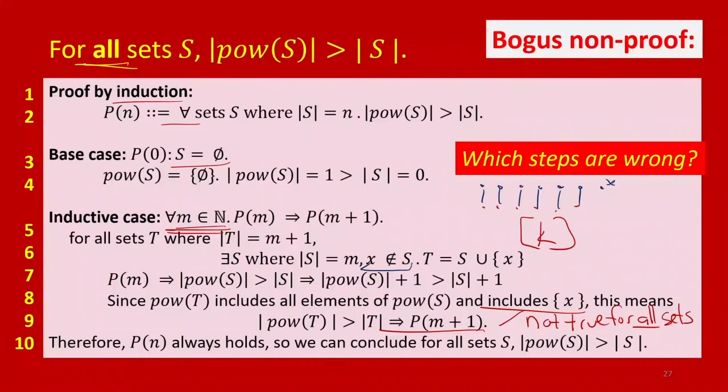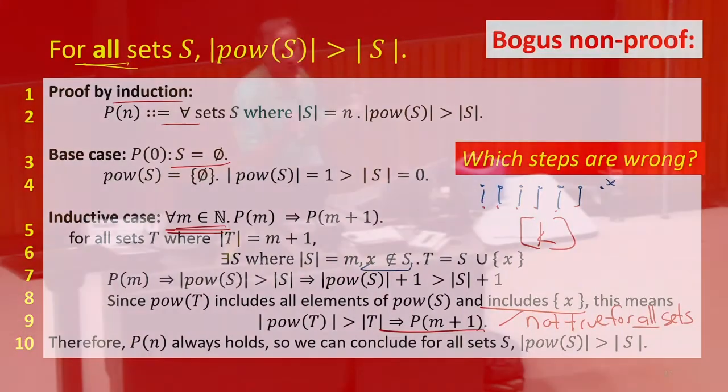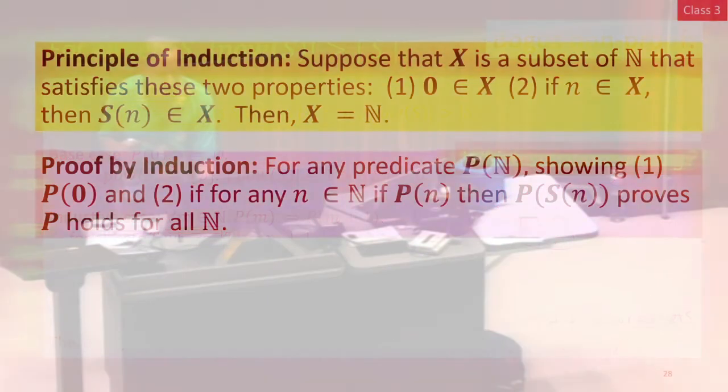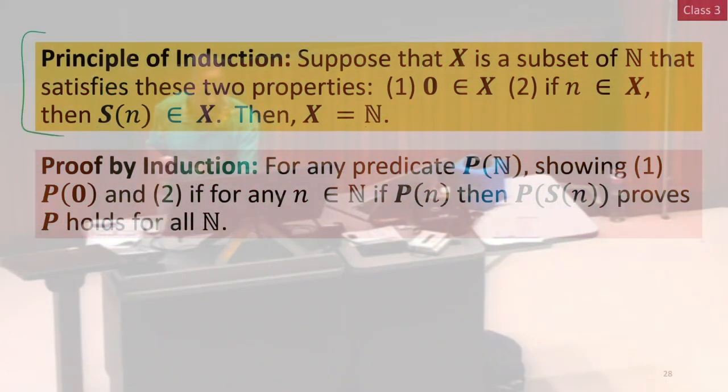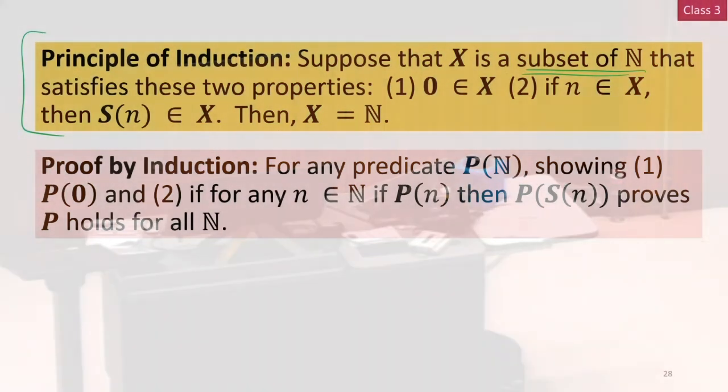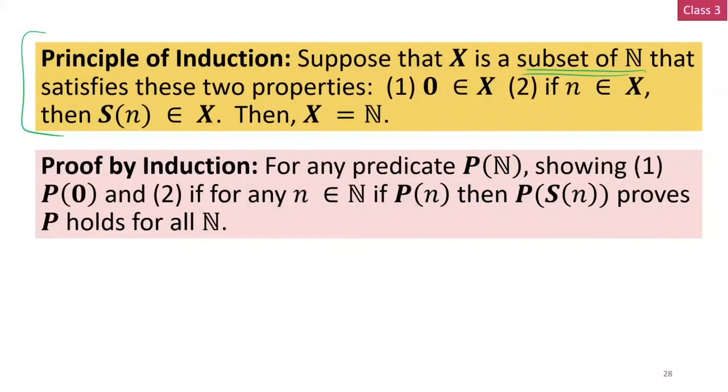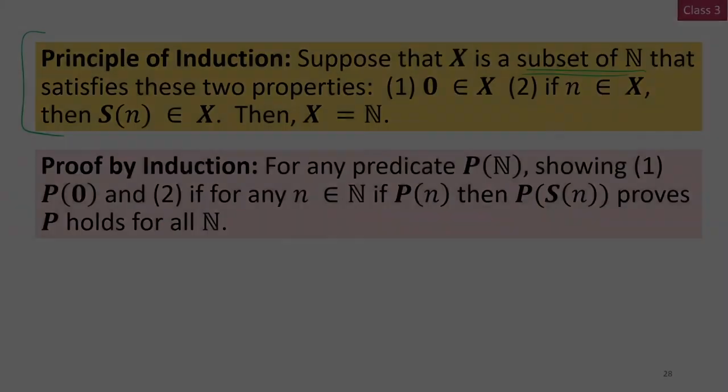So everything about induction doesn't work for infinite sets. We only define the principle of induction for the natural numbers. We have the principle of induction. It is only dealing with subsets of the natural numbers. This proof technique is not going to help us here. We don't have a principle of induction that works on any set. It only works on sets that are subsets of the natural numbers.